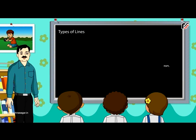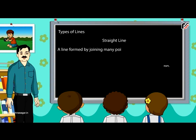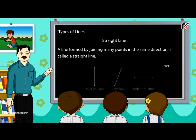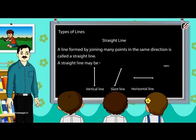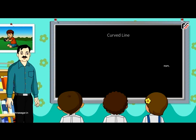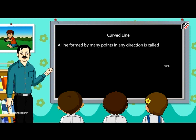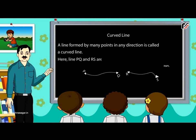Types of lines. Straight line: a line formed by joining many points in the same direction is called a straight line. A straight line may be vertical, horizontal or slant. Curved line: a line formed by many points in any direction is called a curved line. Here, line PQ and RS are curved lines.